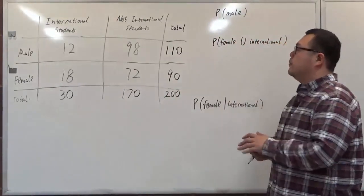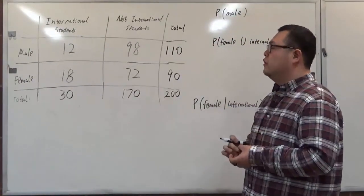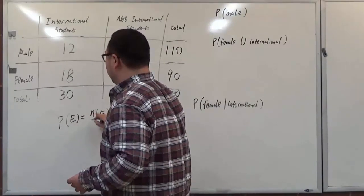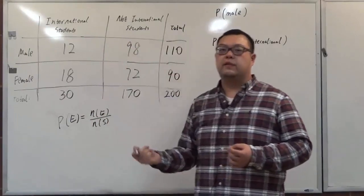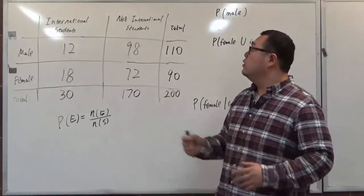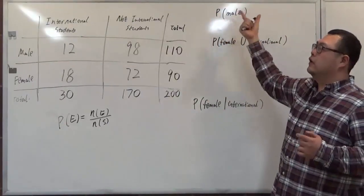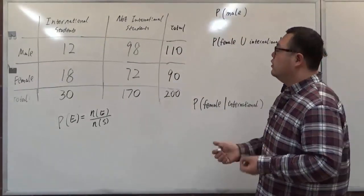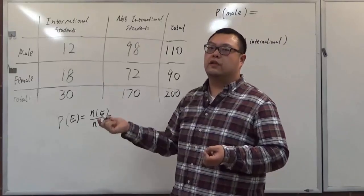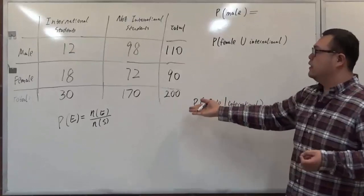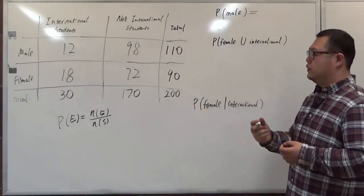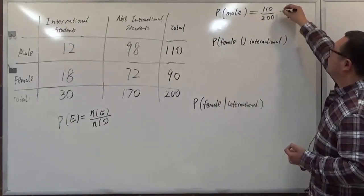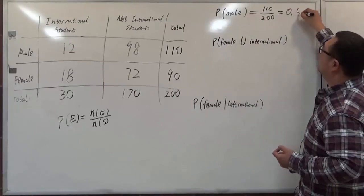The classical approach to probability: the probability of an event is the number of ways that event can happen divided by the sample size — the number of outcomes in the sample space. So if we randomly select one person and ask for the probability that we selected a male, we just need to see how many male students we have. That is 110 divided by the total 200 students surveyed. That probability is 110 over 200, which as a decimal is 0.55.